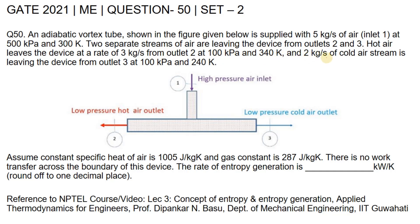And 2 kg per second of cold air stream is leaving the device from outlet 3, the low pressure cold air outlet at 100 kPa and 240 K.